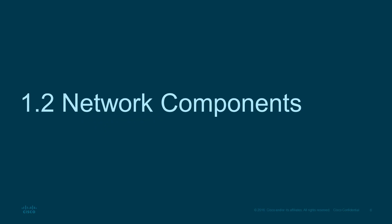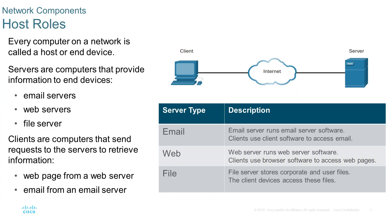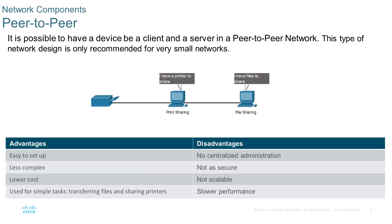Let's look at some network components. Some network components that we have are servers and clients. We have machines that allow us as clients to access the server. An example of a server may be an email server, web server, or file server. If we don't have these machines, we may have a peer-to-peer network where computers can be connected to each other and access each other's resources.